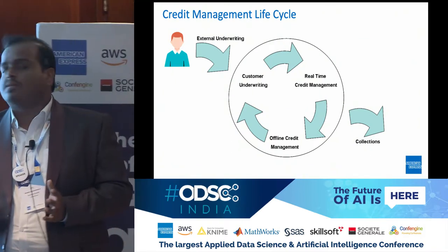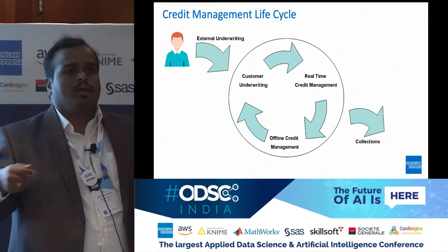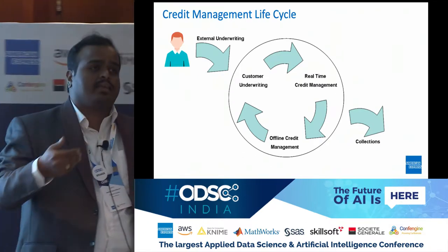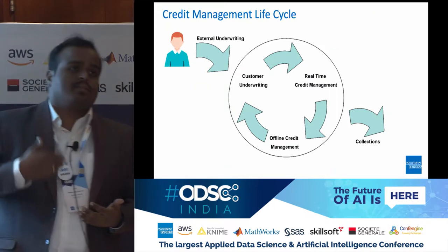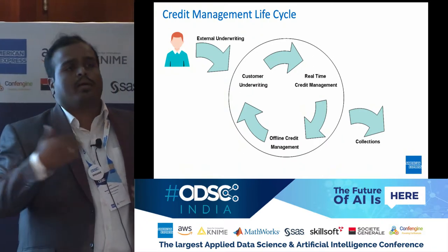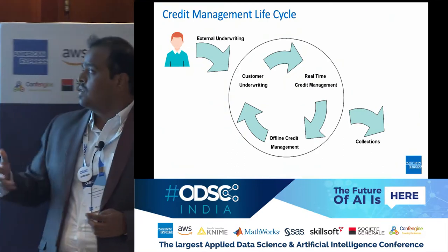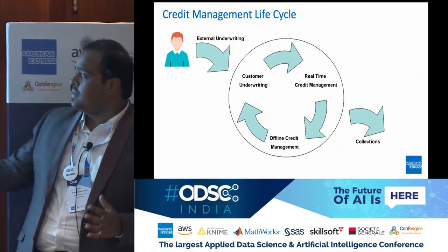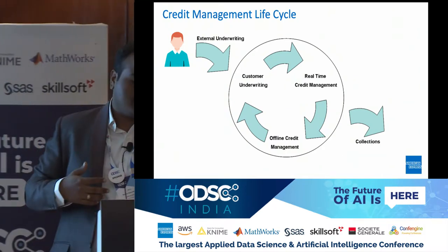Once a customer is on our books, there are many decisions that continuously happen around real-time credit management. Whenever you swipe at a restaurant or in Uber, we decide whether it is a genuine transaction or fraudulent, and whether it is credit-worthy given the customer's past behavior. We also do offline credit management — managing payments and whether they are coming on time. This circle is what we call customer management: before you are in our books you are a prospect, and once you leave you are a defaulter.